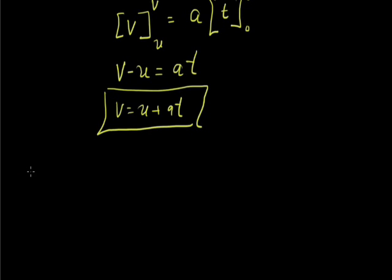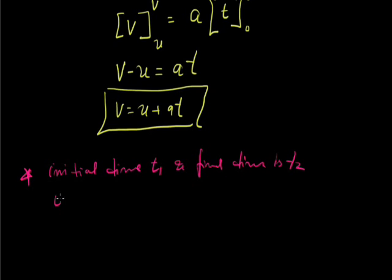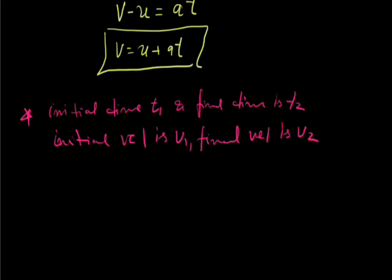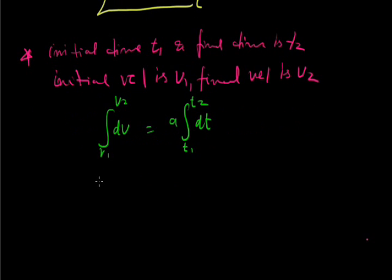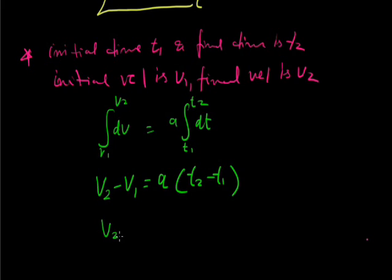In this first equation, if the initial time is not t equal to 0 but is t1, and final time is t2, with initial velocity v1 and final velocity v2, then integrating dv from v1 to v2 and a dt from t1 to t2 gives: v2 minus v1 equal to a into t2 minus t1, or v2 equal to v1 plus a(t2 minus t1).